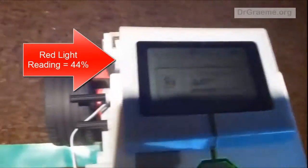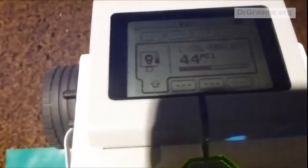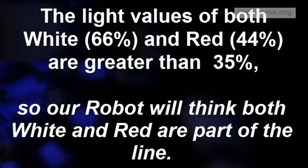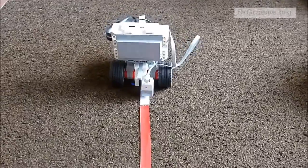But what about the red value? The red value, when we look at it, is 44%. The light values of both white, 66%, and red, 44%, are greater than 35%. And so the robot will think both red and white are part of the line.